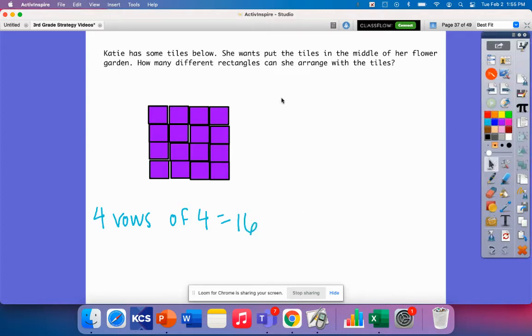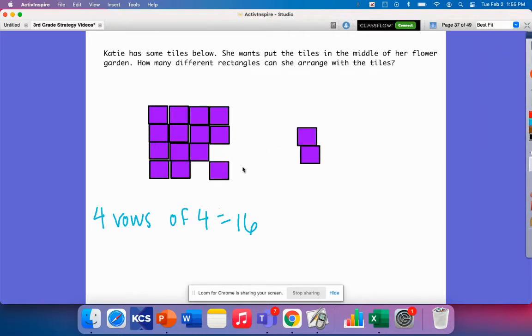Okay, let's see if there's another way to arrange them. What if I took these off? What if I made two rows? Two rows, how many would be in each row?